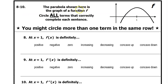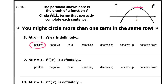The parabola shown here is the graph of a function f. Circle all terms that correctly complete each sentence. At x equals 1, f of x is definitely what? At x equals 1, f is definitely positive because it's above the x-axis. It's not negative, not zero. It's not increasing either because this is a horizontal tangent line — neither increasing nor decreasing. And obviously this is concave down, so we will also circle that.